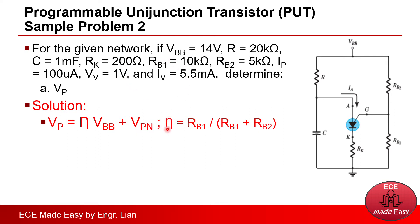But we all know that the formula for standoff ratio is shown here. So we will just need to substitute this formula for the eta on this initial formula for VP. Since both RB1 and RB2 are given, we will be able to solve this problem.